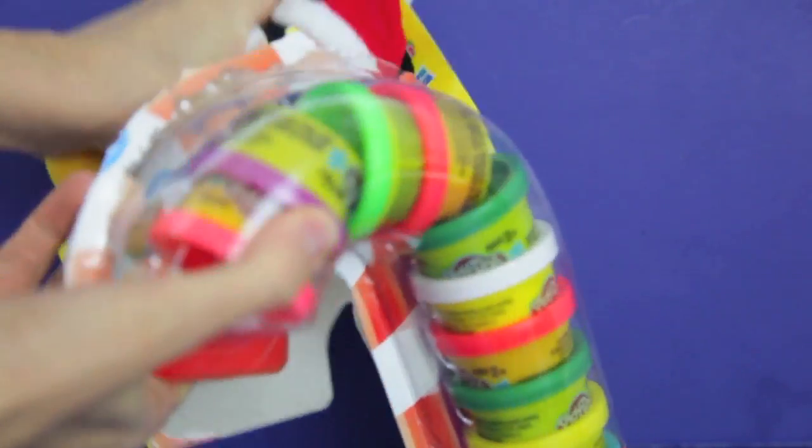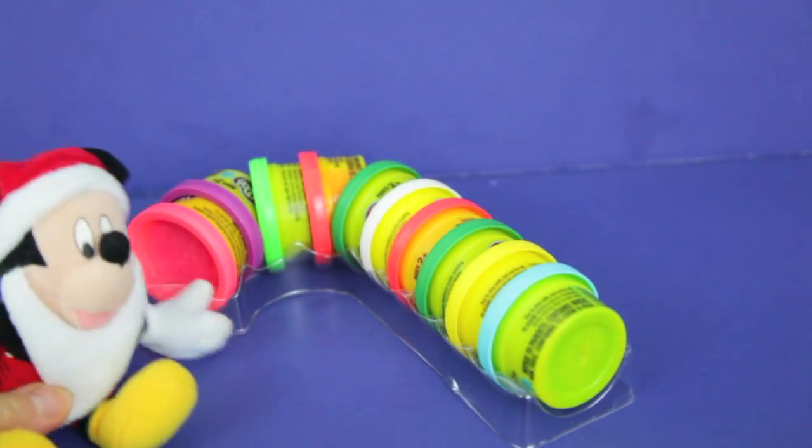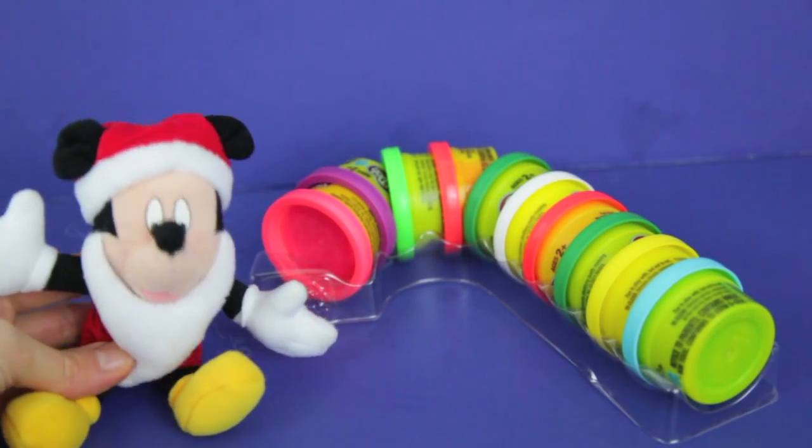Hmm, what should I make? I can make a Christmas tree, or a candy cane. Why don't I just make a candy cane? That makes sense because this Play-Doh is shaped like a candy cane.